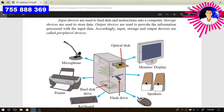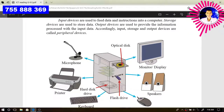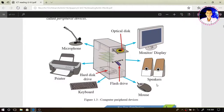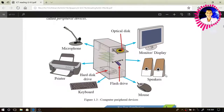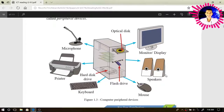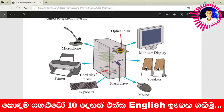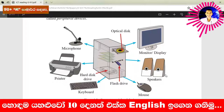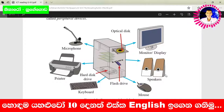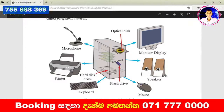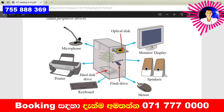In this diagram, we can see several types of devices: microphone, printer, mouse, keyboard, and speakers. Actually, we have already discussed computer hardware. I think you can remember it because we discussed it through a PowerPoint presentation. The computer system is divided into four categories: hardware, software, firmware, and liveware.